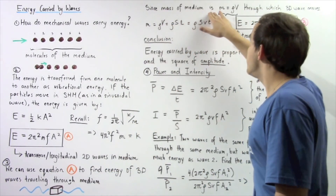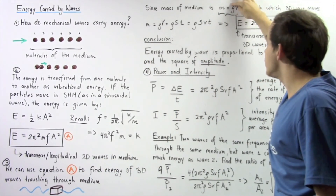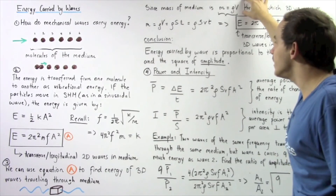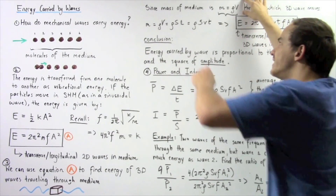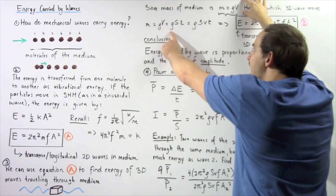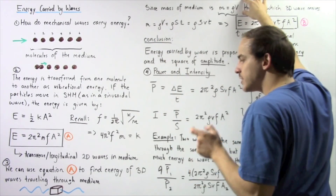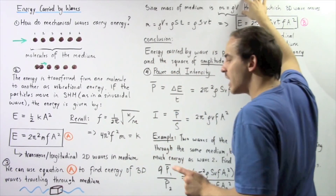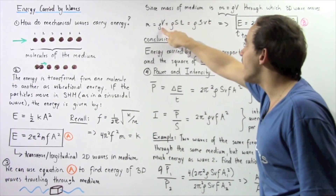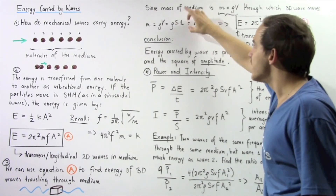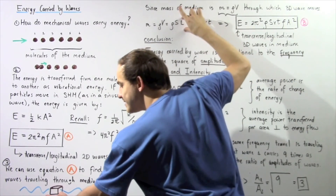The mass of the medium of this section equals the density of that section times the volume. The mass also equals the density times the volume, where the volume is the cross-sectional area S multiplied by the length of the section L. So what exactly is L? L is this distance shown in the diagram.